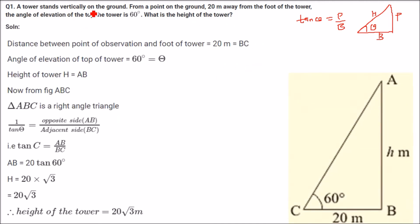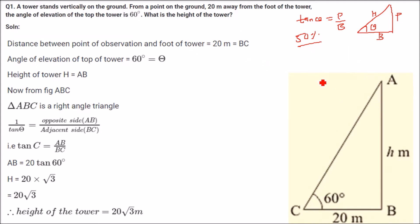So a tower stands vertically on the ground. What we have to do is make a figure — 50% of the solution is making the figure. If you are able to make the figure correctly, then the problem will not be that difficult. The figure is very important. So: a tower stands vertically on the ground; if this is the ground, there is a tower.